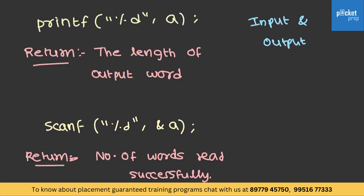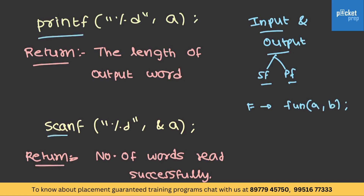Let's try to understand input and output. Scanf and printf are the two things used for input and output. If you observe carefully, a function call is made like this — a function name written followed by the arguments. Printf and scanf are also function calls where printf and scanf are the names of the functions respectively.